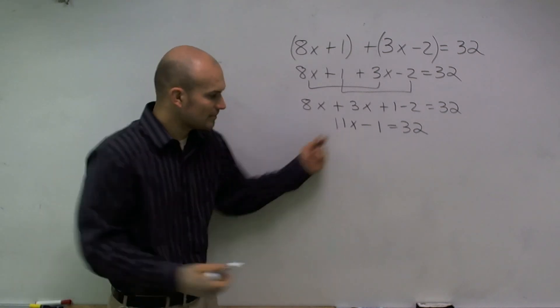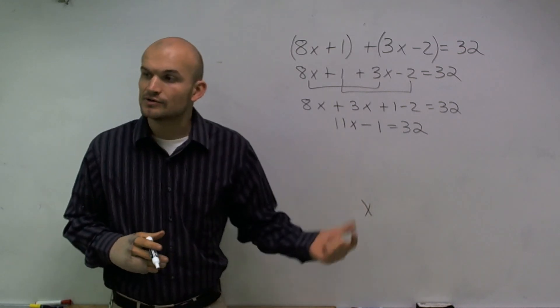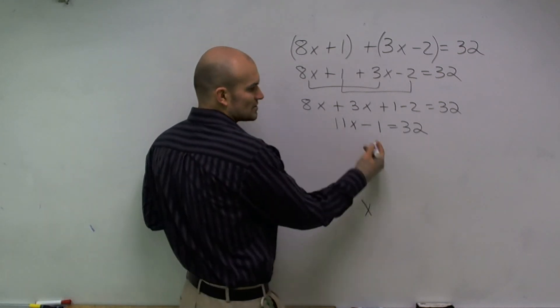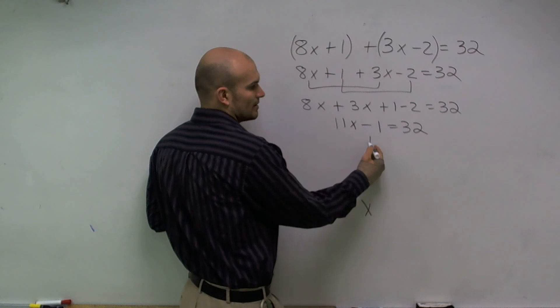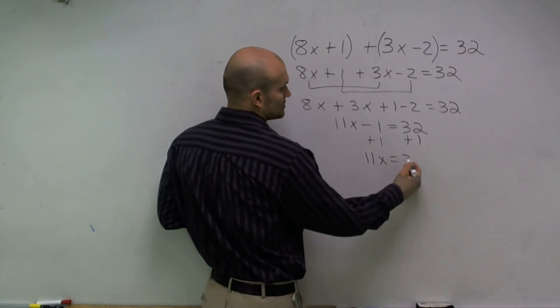And to get my variable by itself, remember, we want to solve for x. We want to find the value of x. So what I need to do is undo my operations. First thing I'm going to do is undo subtraction by 1 by adding 1 to both sides. So I have 11x equals 33.